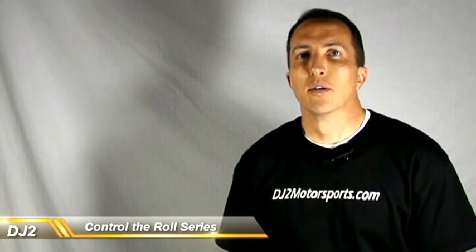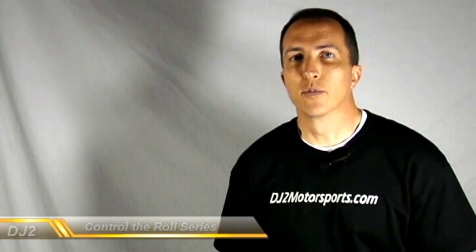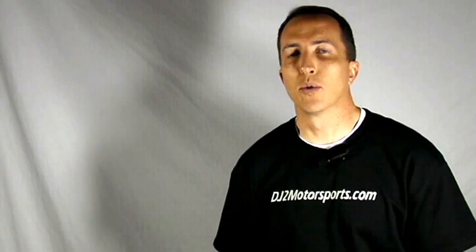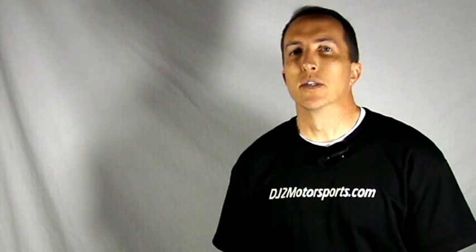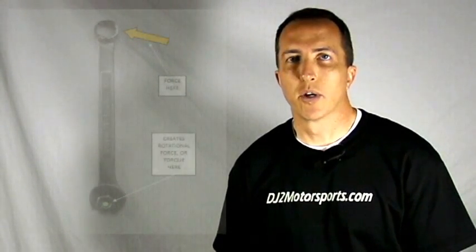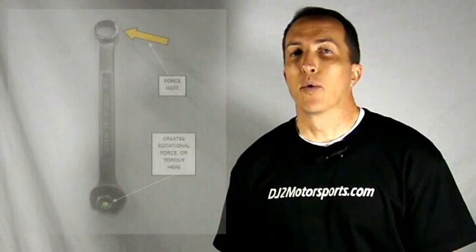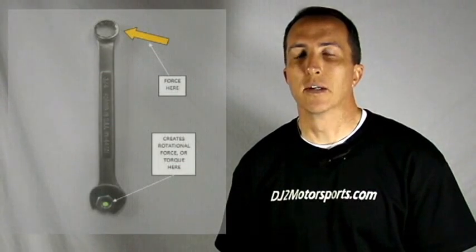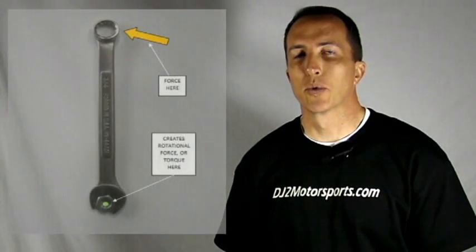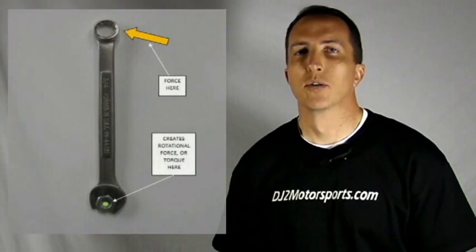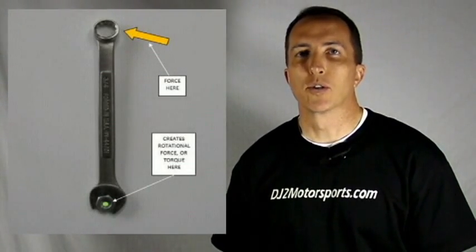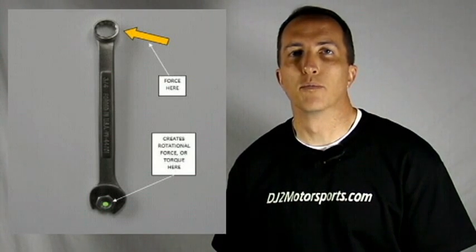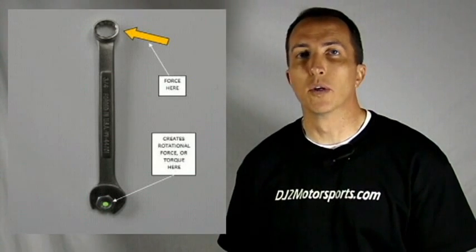Now an easy way to give an example of the force and torque and how this acts on your roll center is if we just take a look at a combination wrench and how we use it to loosen a bolt. That will give you a good idea, because what we're doing is we're applying force to the end of the wrench and it creates a twist or torque around the pivot point, which is the center of the bolt.